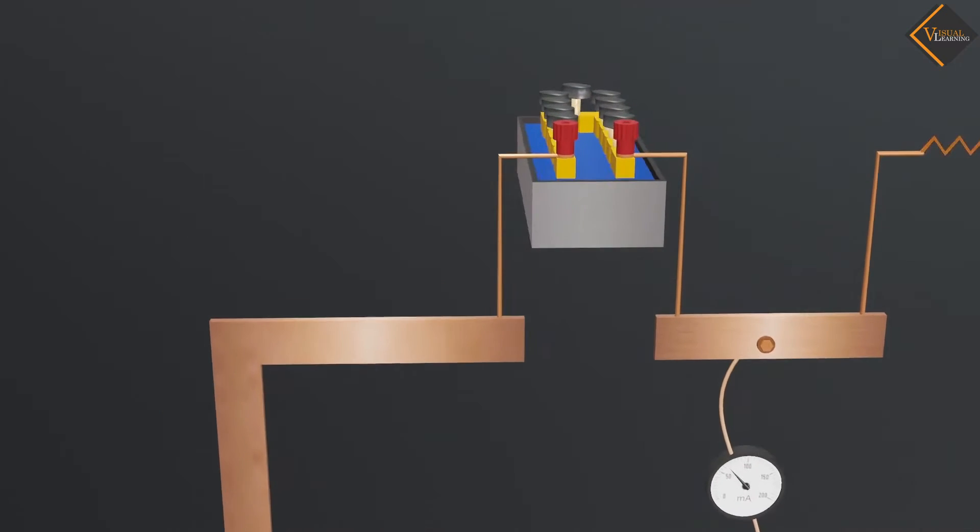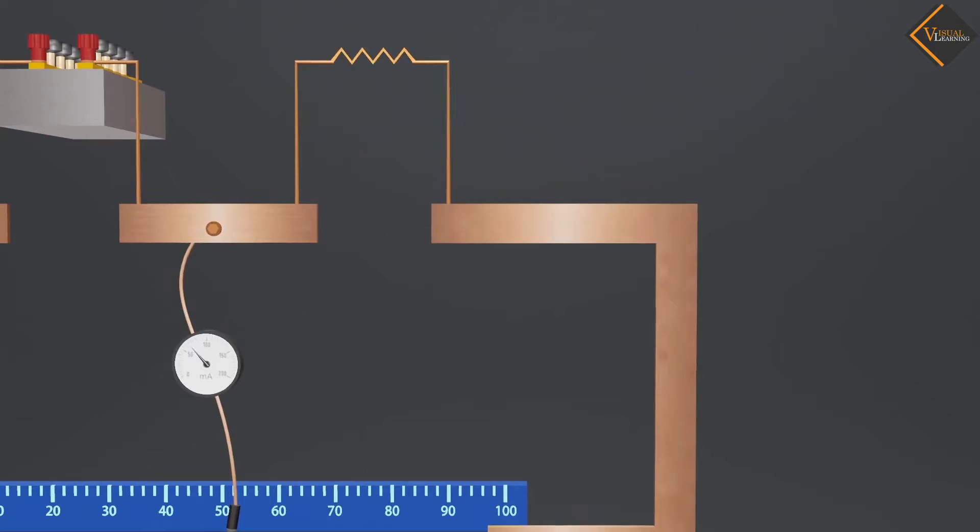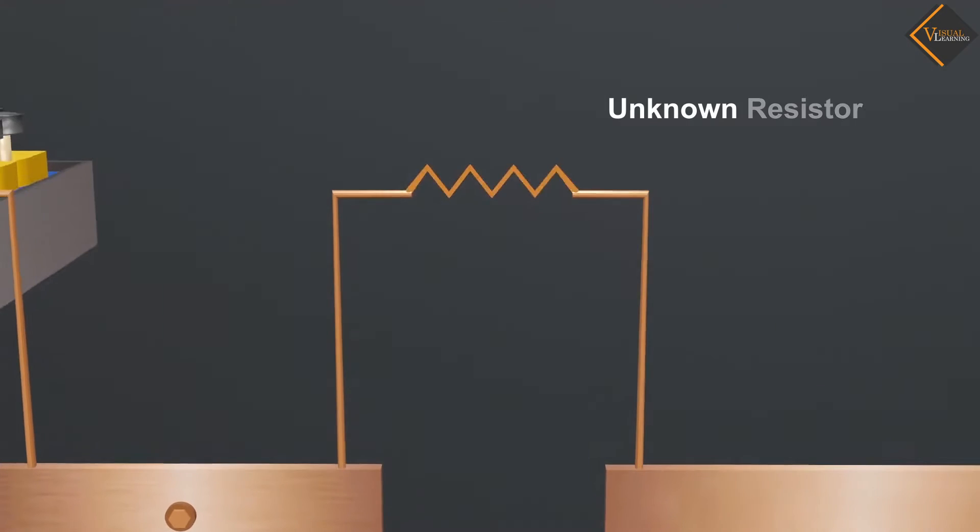From the end of the left strip, a resistor box is connected and from the end of the right strip, an unknown resistor is connected.